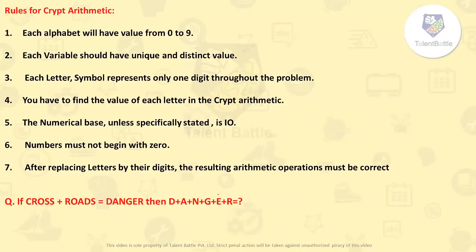Let's start with the question based on cryptarithmetic concept. First, let me show you what type of question this is. The question is: if CROSS plus ROADS equals DANGER, then what is the value of D plus A plus N plus G plus E plus R, which is DANGER?